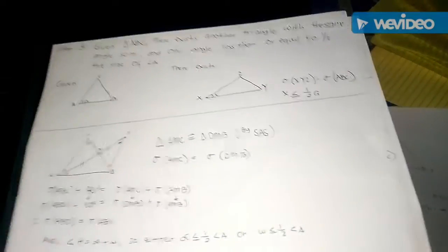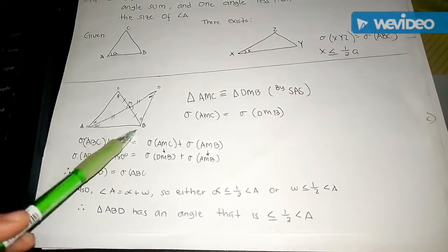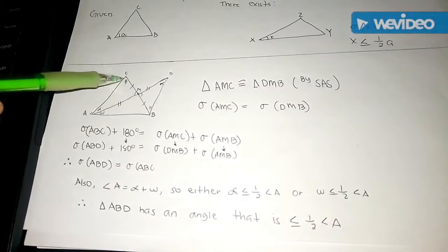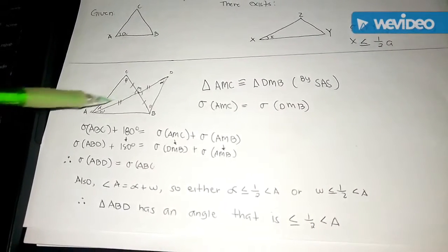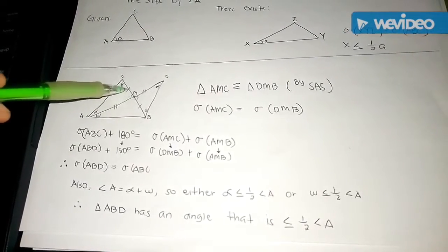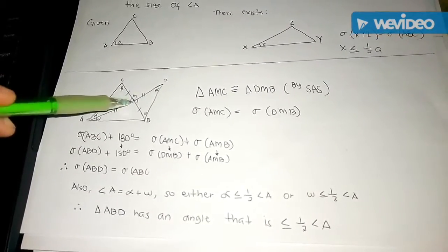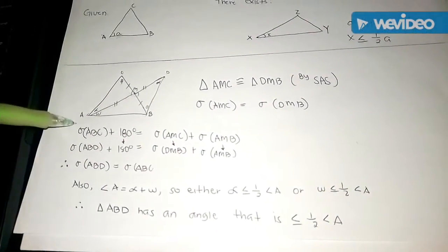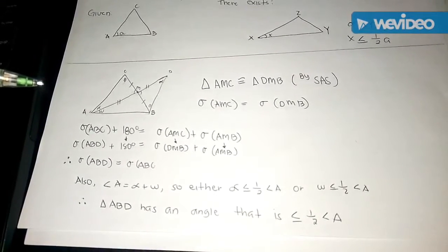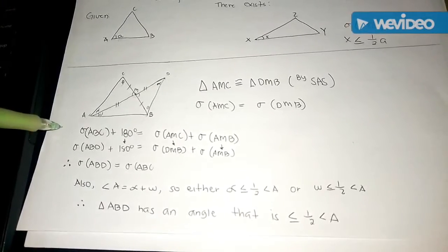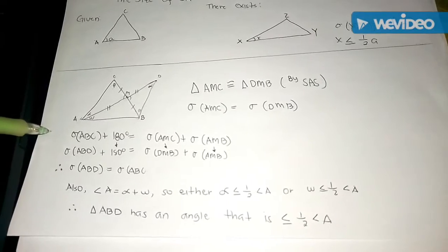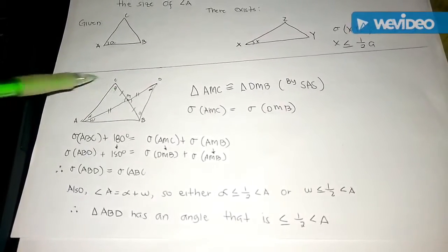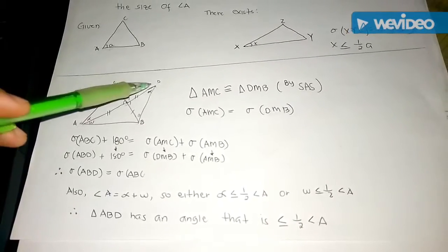To begin the proof, consider triangle ABC and construct the midpoint M of side BC. This divides BC into two congruent segments BM and MC. Draw a line from A to M, then extend AM to another point D such that AM = MD — we can do this by Euclid's length transfer proposition. We then have two vertical angles, which are equal by Euclid's proposition on vertical angles.